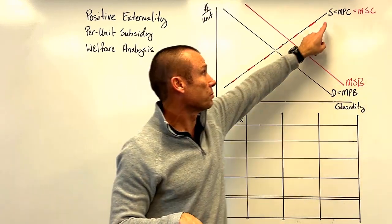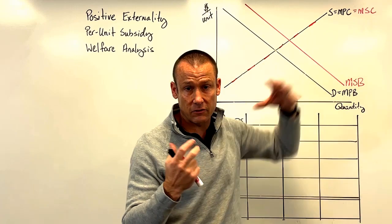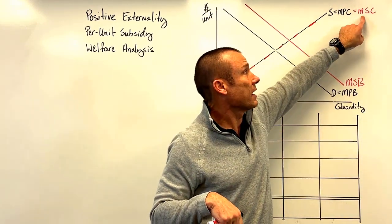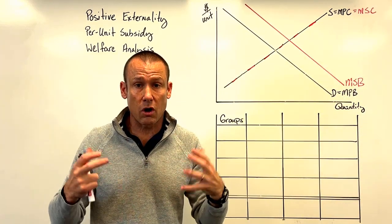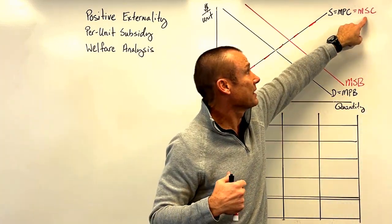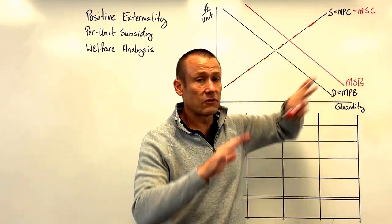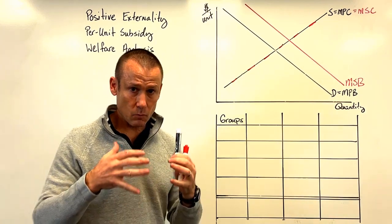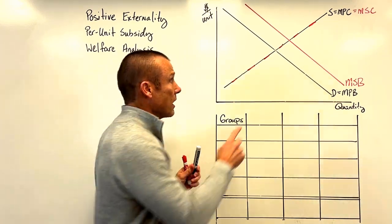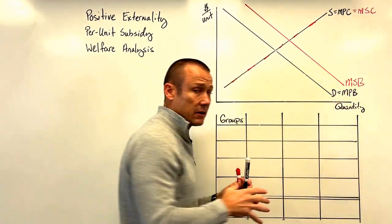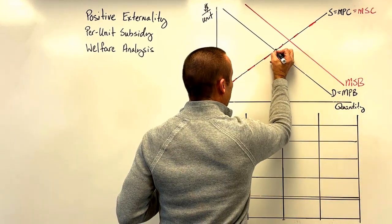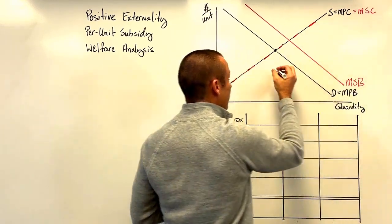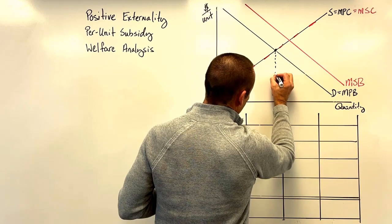There are no externalities from the production of the good, so supply always equals MPC because the supplier is making decisions based on their private costs. The social cost, which includes everything — that total cost of producing the good — equals the marginal private cost, so there's no externality on the production side. When we have positive externalities and leave the market alone, the supplier and demander will intersect based on their private benefit and private costs.